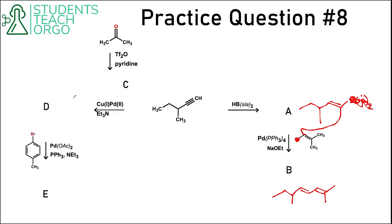Now let's work to the left. We have a ketone being exposed to Tf2O and pyridine — this is the reaction we need to make a triflate, giving us compound C with OTf. Going from C to D, we have a terminal alkyne and a triflate, with reagents including a palladium catalyst with copper — this is the Sonogashira reaction, where we couple that carbon to this carbon. So D has to have the triple bond still there, with those three carbons from the triflate attached.